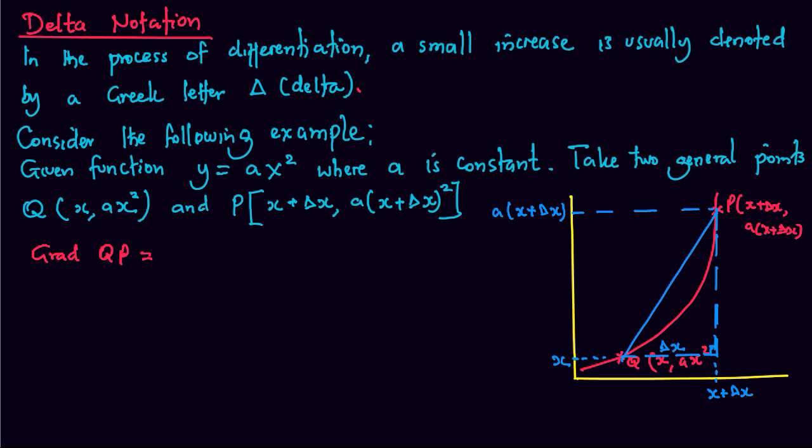We get gradient QP as change in y, which will be ax squared plus twice, 2A, x delta x plus delta x squared